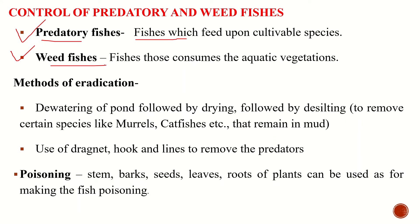Due to this, it becomes necessary to completely remove or control predatory and weed fishes for fish farming purposes. Some well-known predatory fishes found in freshwater ponds include Clarias batrachus, Channa punctatus, Heteropneustes fossilis, Singala, and Notopterus chitala. Some weed fishes include Barilius species, Rasbora daniconius, and Danio species, which are also found in culturable ponds.